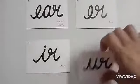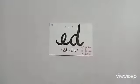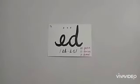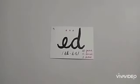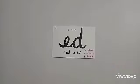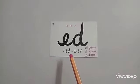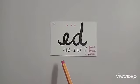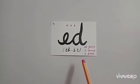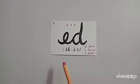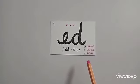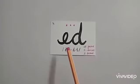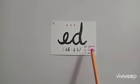Moving on to our next phonogram. Now this phonogram has three sounds. It is ED, D, T. Repeat after me: ED, D, T. Used in past tense ending. ED, D, T. Good. ED, D, as in folded.